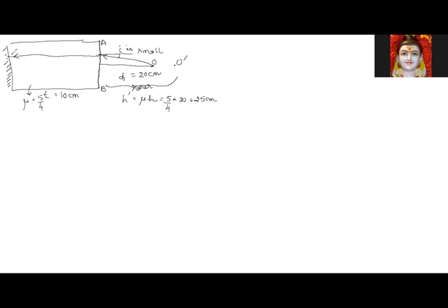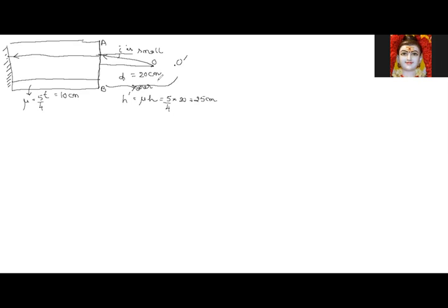For the mirror, the object is not actually 30 centimeters from the mirror — but the object appears to be at 10 (thickness) plus 25 = 35 centimeters from the silvered surface.